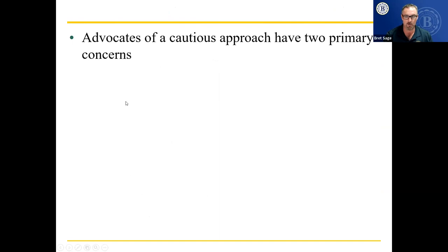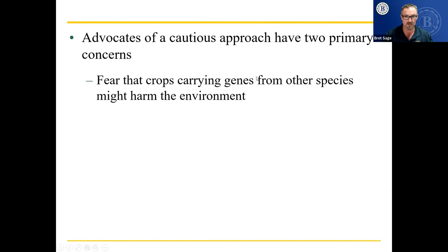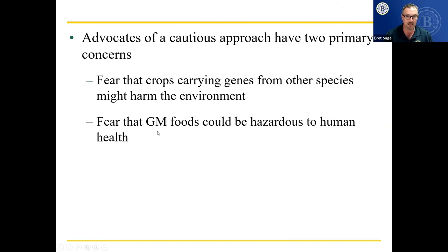Advocates of a cautious approach have two primary concerns. First, what if genes from genetically modified corn end up in wild species, causing problems for them or even causing them to go extinct? Second, genetically modified foods could be unsafe for people and could cause cancer or other health effects. Because they haven't been around that long, we don't know for sure. I would rather eat genetically modified corn than corn carrying pesticides, because they're pretty sure pesticides are unsafe, but they're not certain about what genetically modified organisms will do.